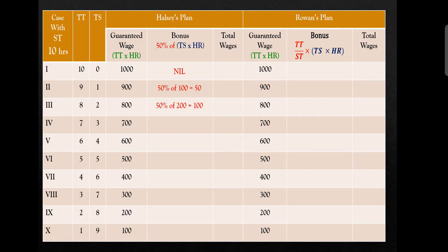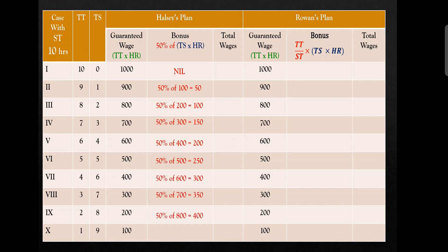In the next cases, for each additional hour saved, time saved into hourly rate increases by 100 rupees. At 50% of that, under Halsey's plan, the bonus is 150, 200, 250 and so on for each successive case. In the 10th case, time saved is 9 hours, so 900 rupees maximum; 50% of that gives 450 rupees bonus. So the Halsey bonus calculation is very straightforward — a constant 50% of time saved multiplied by hourly rate.